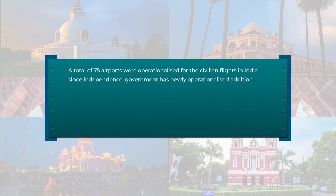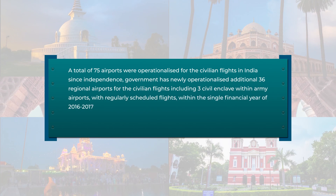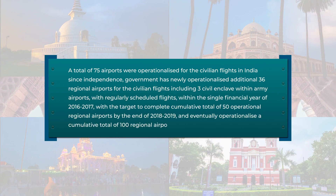The plan was to develop 15 airports during 2017–18, another 15 during 2018–19, and 20 more during 2019–20. A total of 75 airports were operationalized for civilian flights in India since independence. The government has newly operationalized an additional 36 regional airports for civil flights, including 3 civil enclaves with army airports, and plans to operationalize a cumulative total of 100 regional airports by 2018–19.